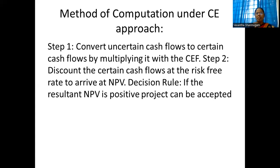To calculate using the certainty equivalent approach: Step 1 — convert uncertain cash flow to certain cash flow by multiplying with the certainty equivalent factor. Step 2 — discount the certain cash flow at the risk-free rate to arrive at NPV. Decision rule: if the resultant NPV is positive, accept the project proposal. NZ Limited is considering a new project. The management uses the certainty equivalent approach. Certainty equivalent factor values given: 0.90, 0.85, 0.75, 0.70, 0.65.